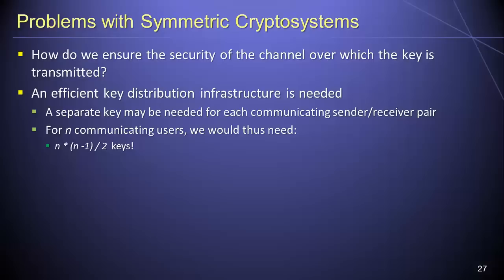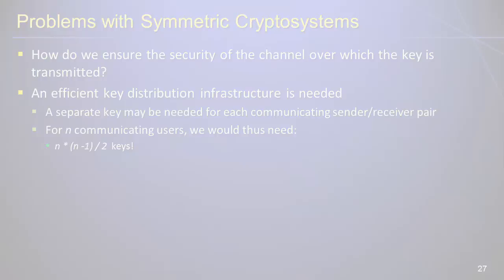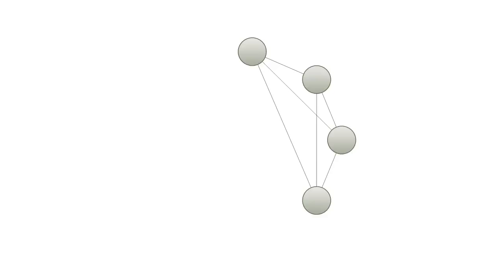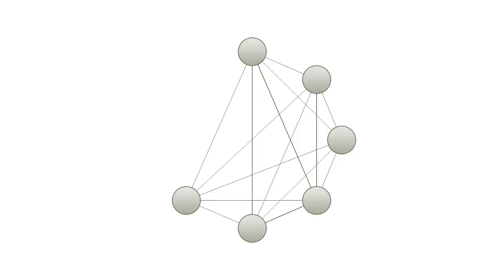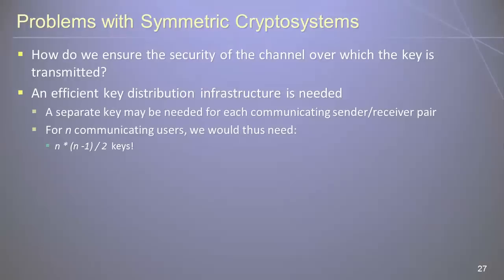A major problem with symmetric cryptosystems is ensuring the security of the channel over which the key is transmitted. If two parties wish to communicate securely using a symmetric cryptosystem, they need to exchange a secret key via a secure channel. But how can a secure, encrypted channel be established to share the key if establishing a secure channel requires that both parties already have a secret key? This dilemma is known as the key exchange problem. Another major problem relates to the number of unique keys needed for large numbers of people to securely communicate: a separate key is needed for each sender-receiver pair, and for n users, we need n times (n minus 1) divided by 2 keys — a number that grows dramatically as users increase.